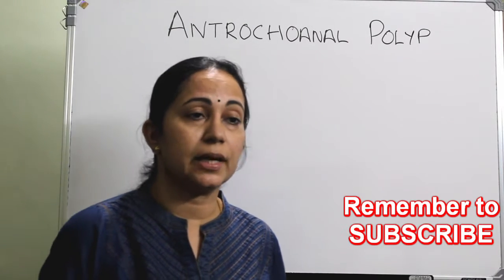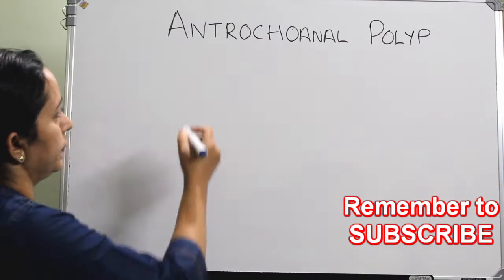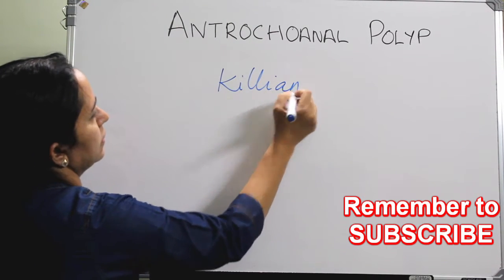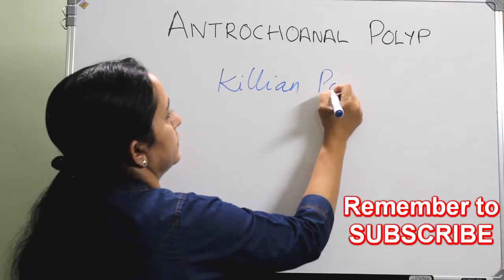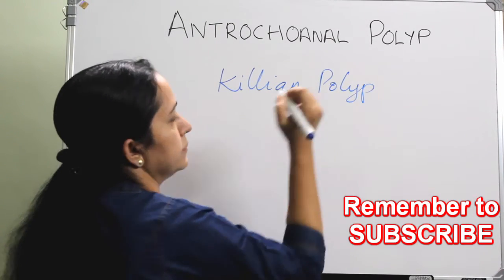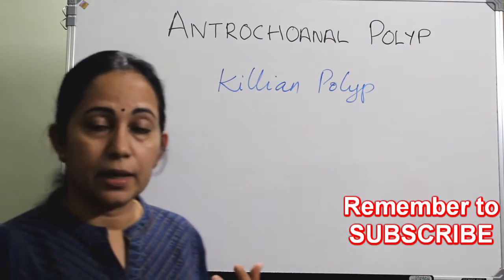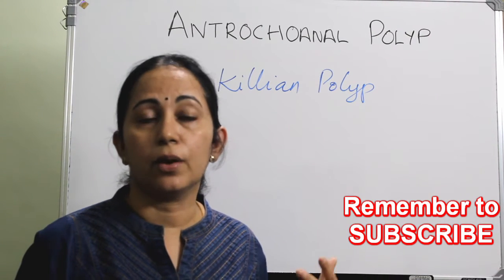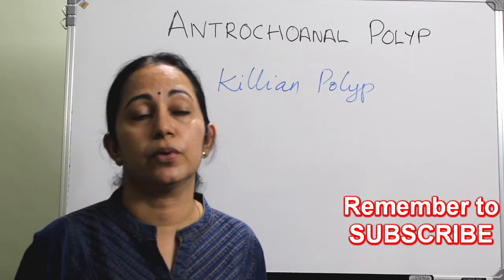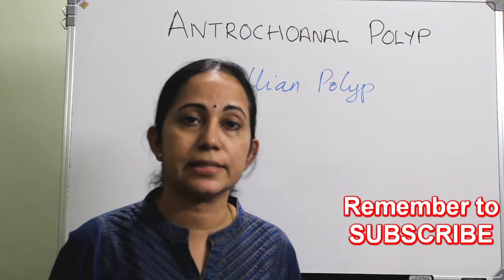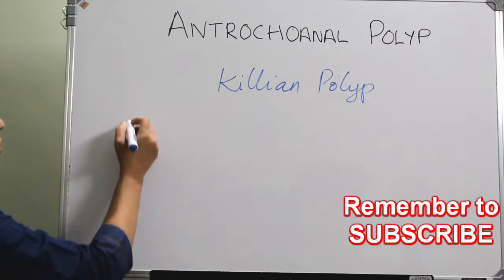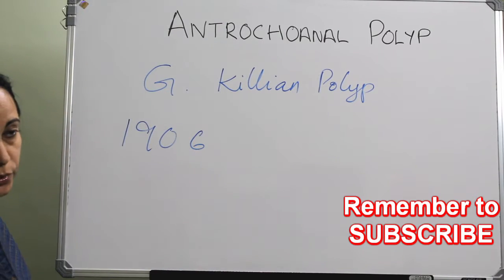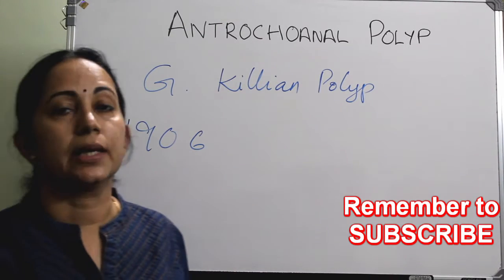This AC polyp is otherwise called a Kilian polyp. The first paper describing the AC polyp was published in Lancet in 1906 by Jester Kilian, so it is otherwise called a Kilian polyp.